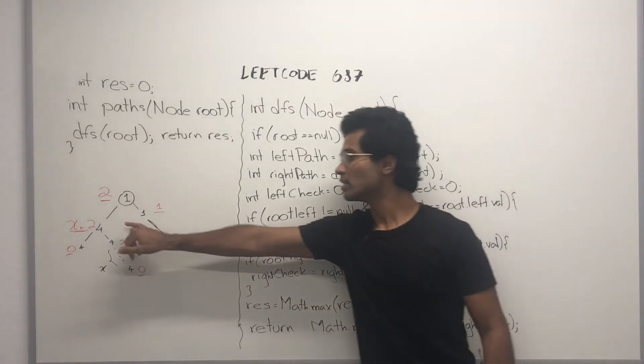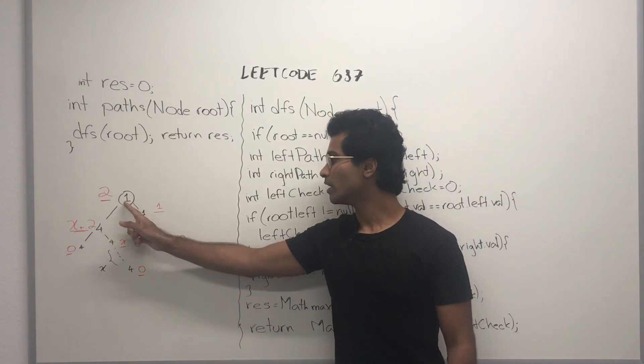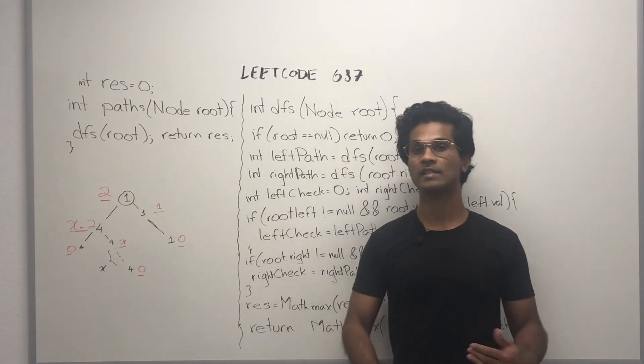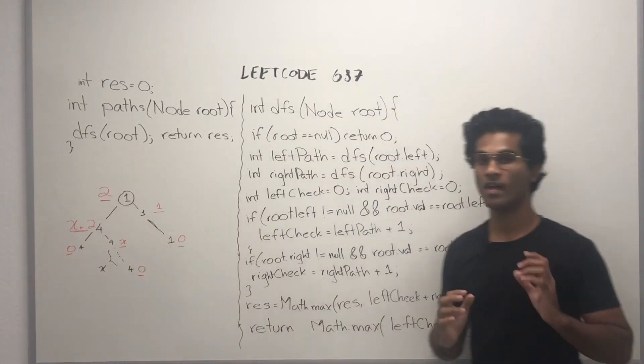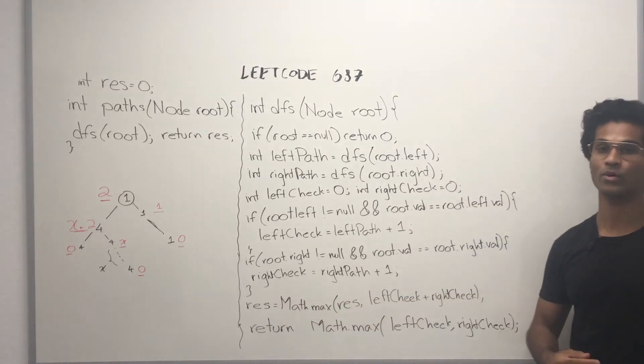So this 4 is going to have x plus 2, but 1 and 1 and 1 is also going to have a value of 2. Since x plus 2 is greater than 2, we care about this. That's why we have a global variable and we keep track of everything every time we return.